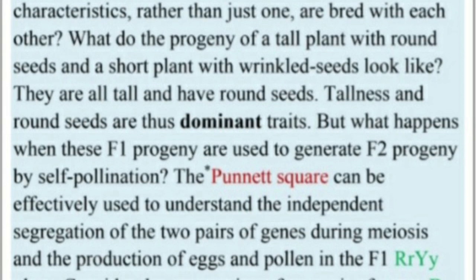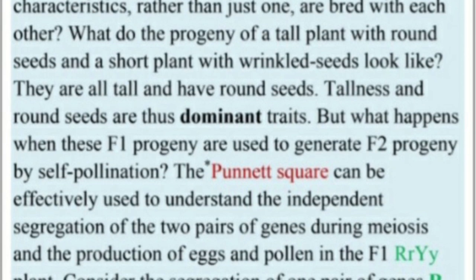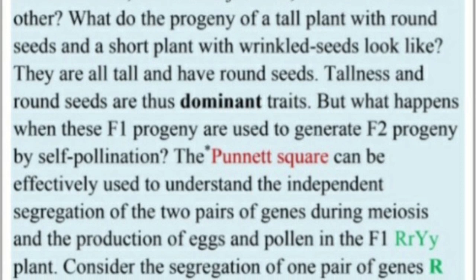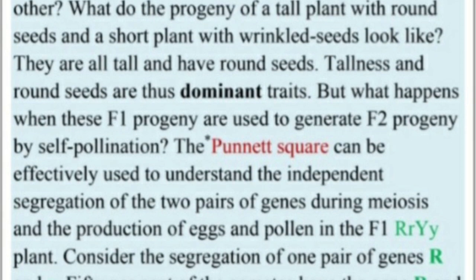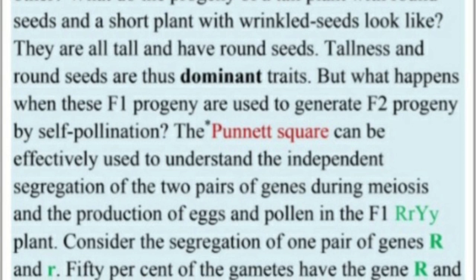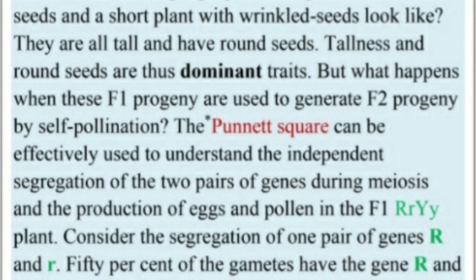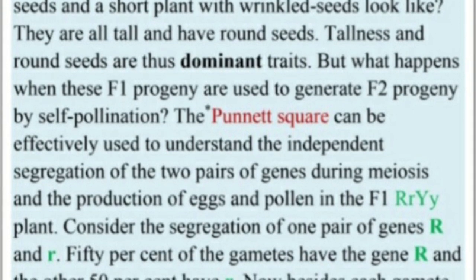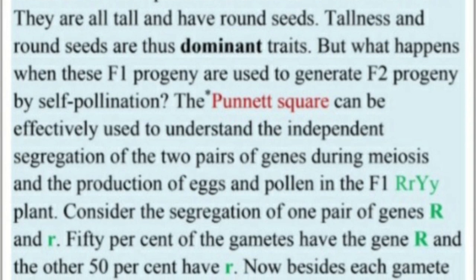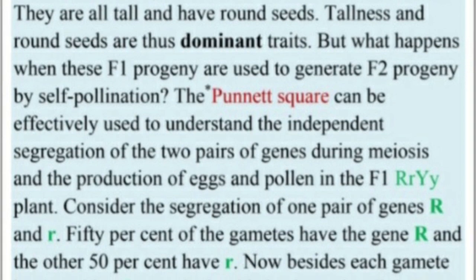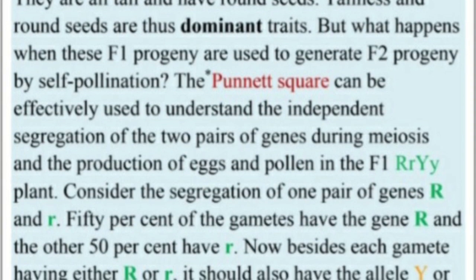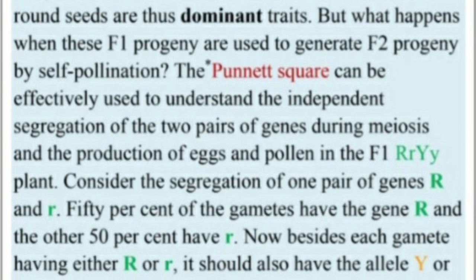But what happens when these F1 progeny are used to generate F2 progeny by self-pollination? The Punnett square can be effectively used to understand the independent segregation of two pairs of genes during meiosis, and the production of eggs and pollen in the F1.